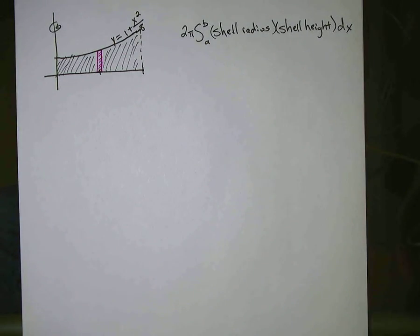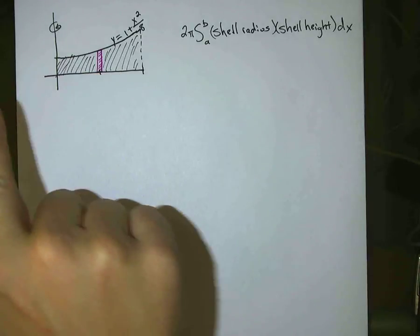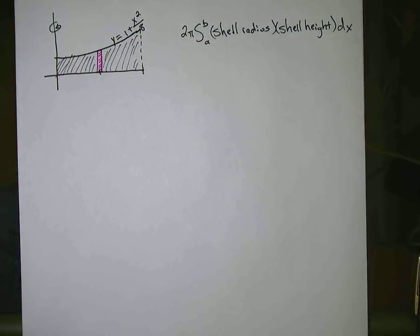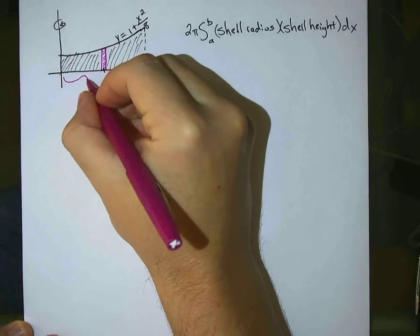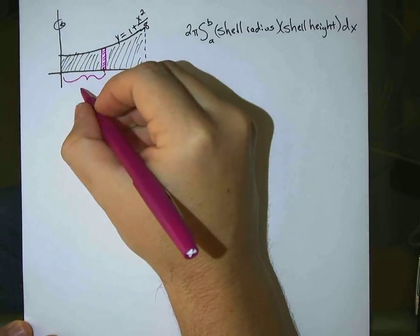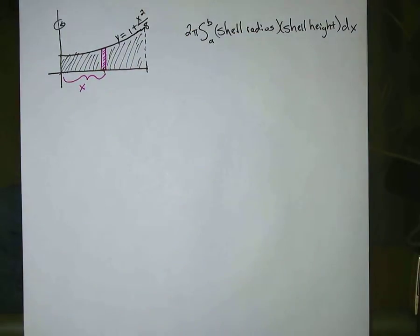Based on that, the circle, or the shell that it's creating as it's going around the y-axis, the radius of that is going to be some x value. Okay, so that gives us our shell radius.